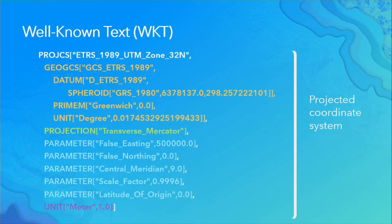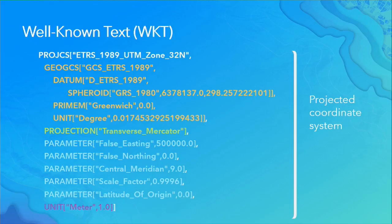In a projected coordinate system WKT, we can see it is based on an underlying geographic coordinate system. We also have a name, then the name of the projection — the particular mathematical algorithm being used — then whatever parameters are appropriate to that algorithm, and finally a linear unit value: meters, feet, or whatever. For linear units, it's the conversion to meters; for angular units, it's always the conversion to radians.